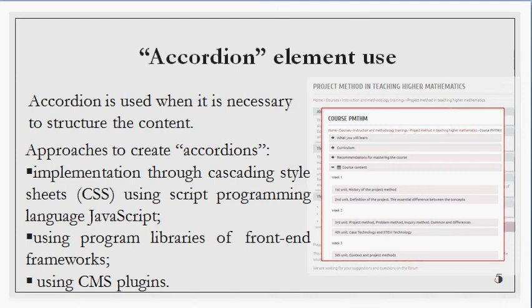There are several approaches to create accordions: accordion program implementation through CSS and JavaScript, using the jQuery library for stylization and interactivity, using program libraries, fonts, and frameworks, or using content management system plugins. On the platform High School Mathematics, we used the plugin Responsive Accordions and Columns, which includes a set of the main tools to create accordions. The main advantages of using plugins are the flexible settings of accordion appearance, easy data entry, and content editing published in accordion sections.